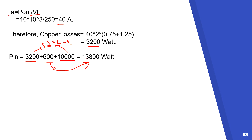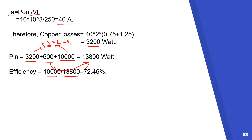The 13.8 kilowatt is the mechanical power provided to the shaft. It is subject to frictional losses, then copper losses, and after these we have the power output. So the efficiency equals the power output of 10 kilowatt over the input power of 13.8 kilowatt, giving an efficiency of 72.46%.